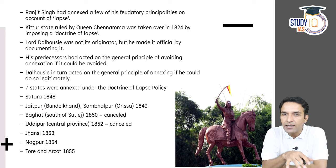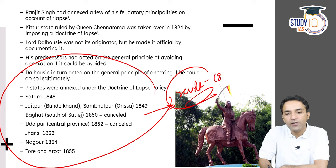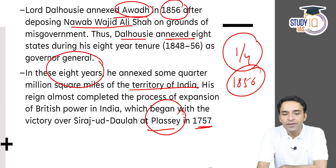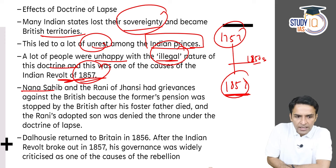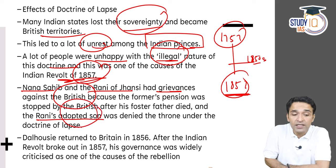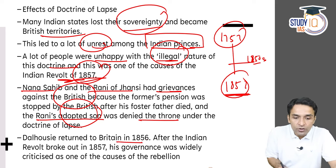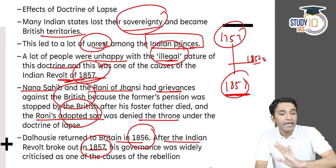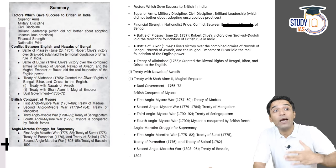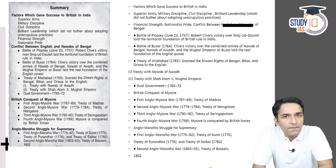Dalhousie returned to Britain in 1856, and just one year later — in 1857 — the revolt broke out. He was widely criticized because he neither anticipated the rebellion nor could prevent it, and his policies were probably the reasons for the revolt. Before Dalhousie, governors followed the policy that if annexation can be avoided, avoid it — prefer subsidiary alliance over war. Dalhousie in 1848 was the first expansionist who followed the Doctrine of Lapse aggressively for 8 years, and the resentment that built up over those 7–8 years specifically became the reason for the revolt.